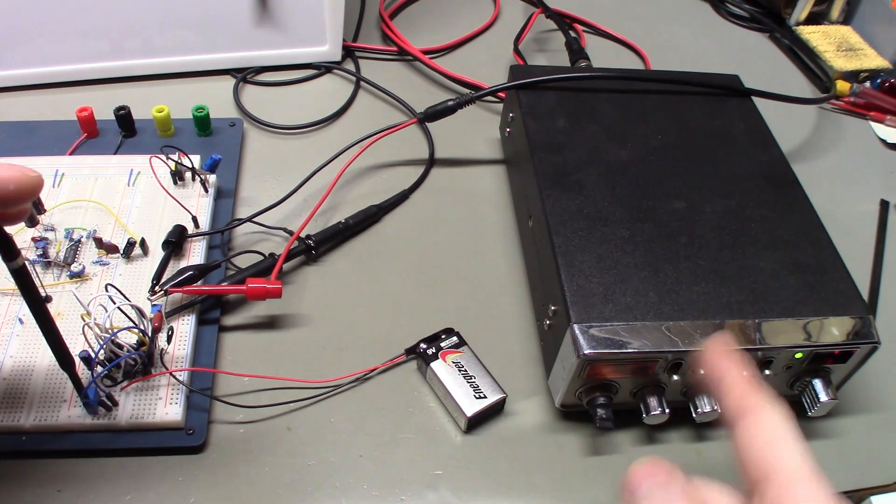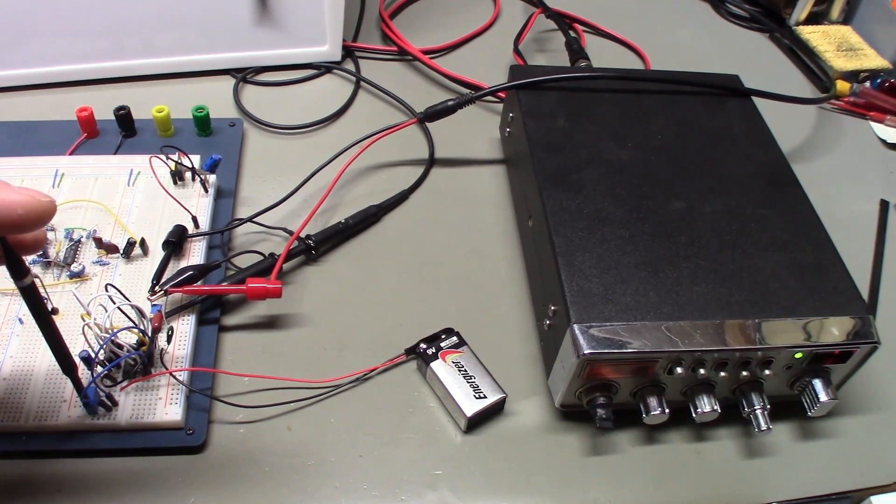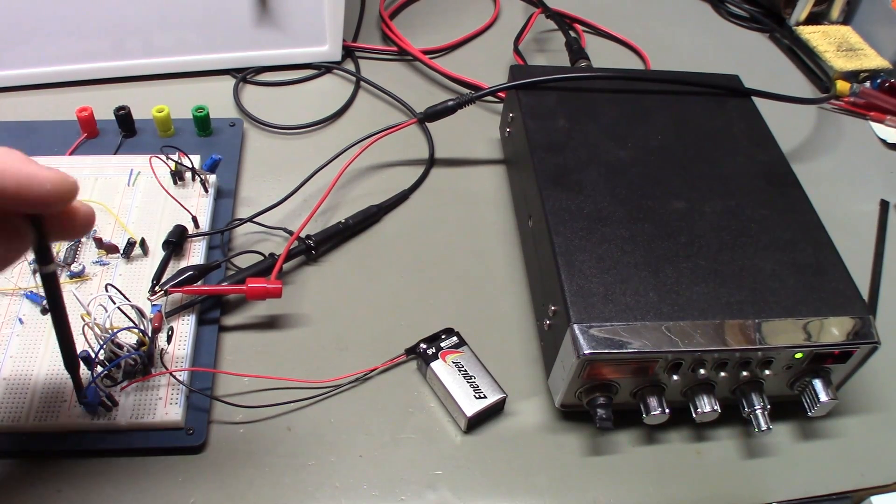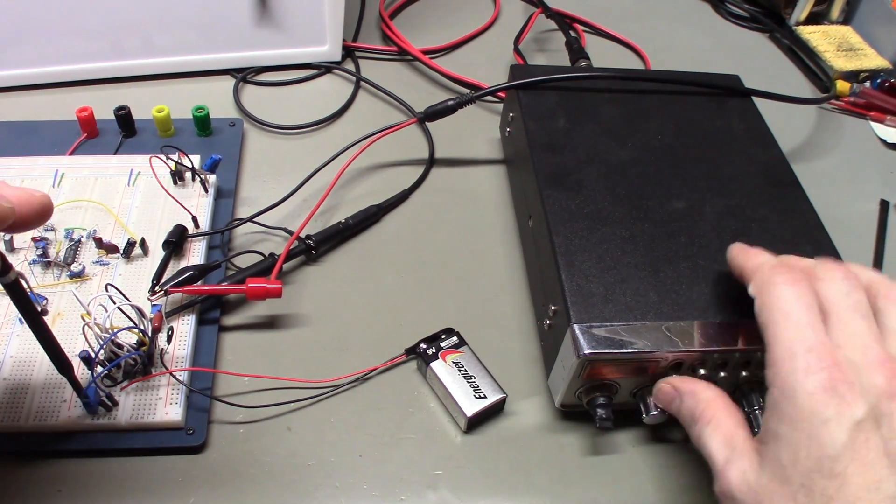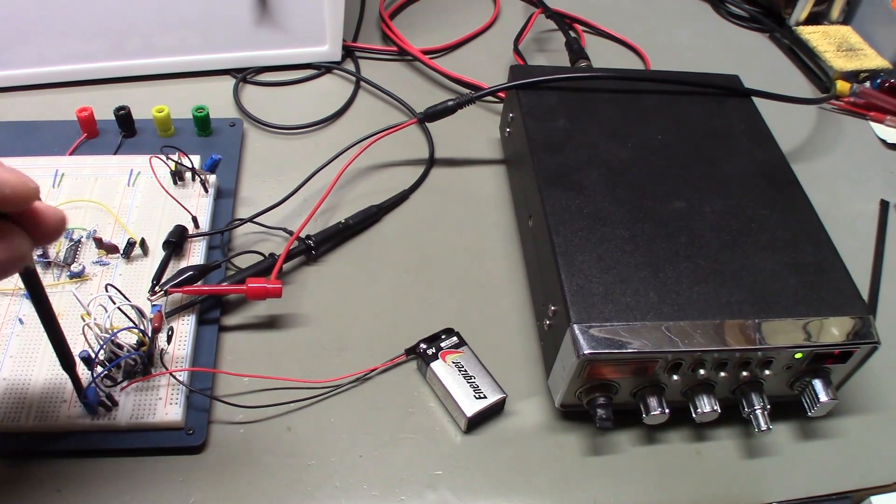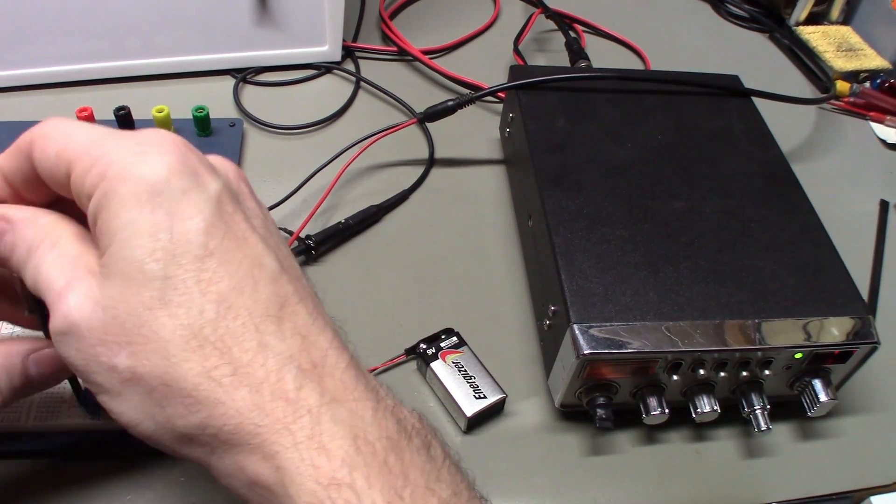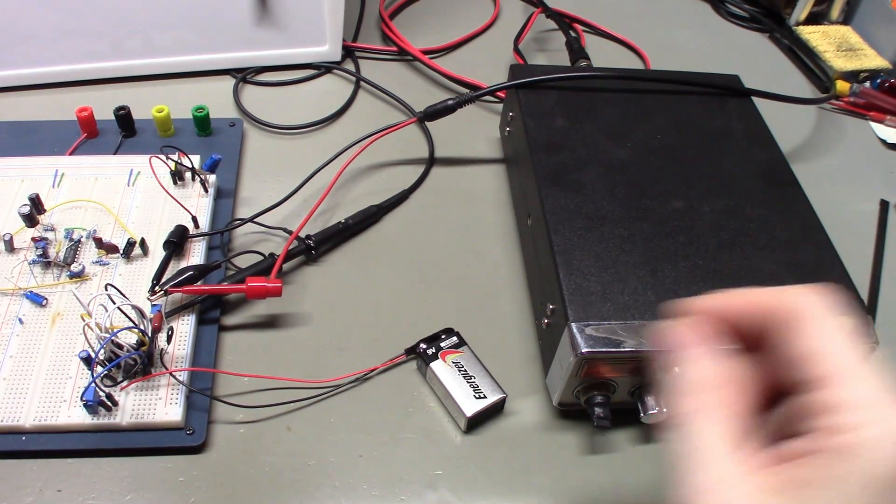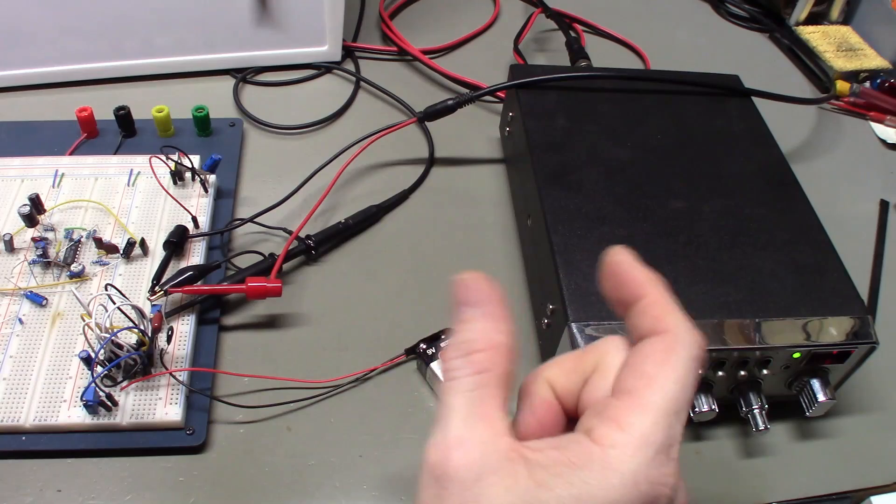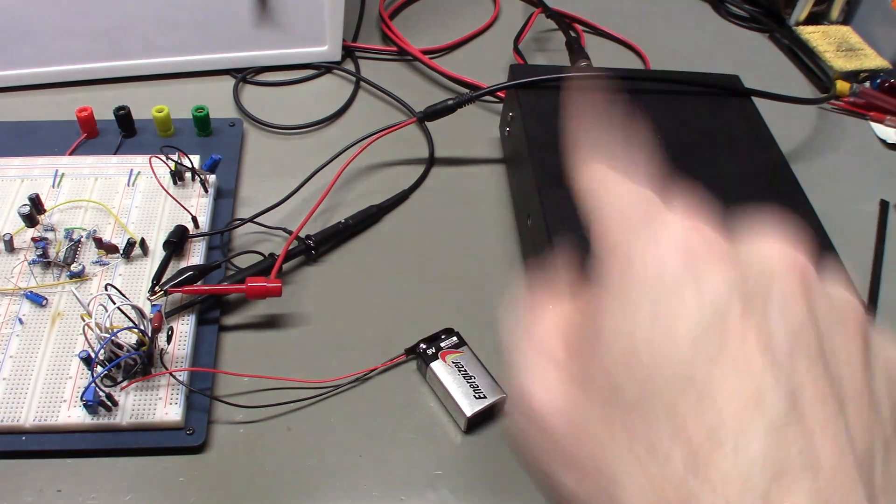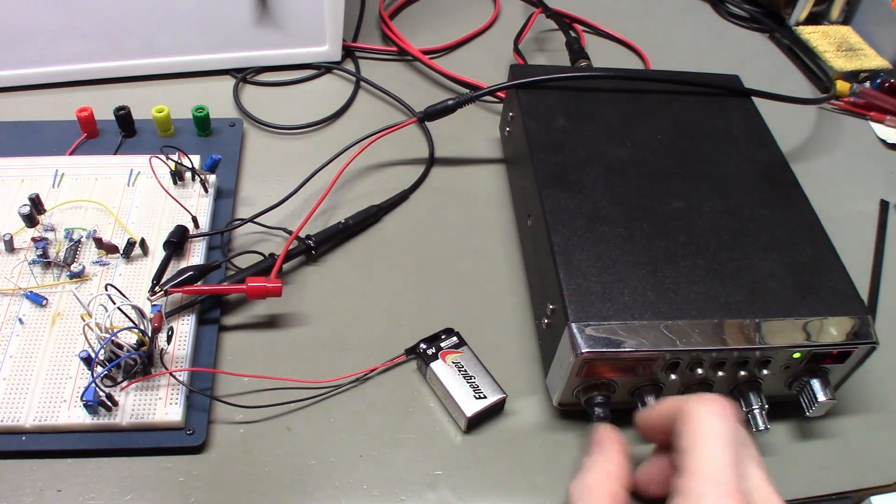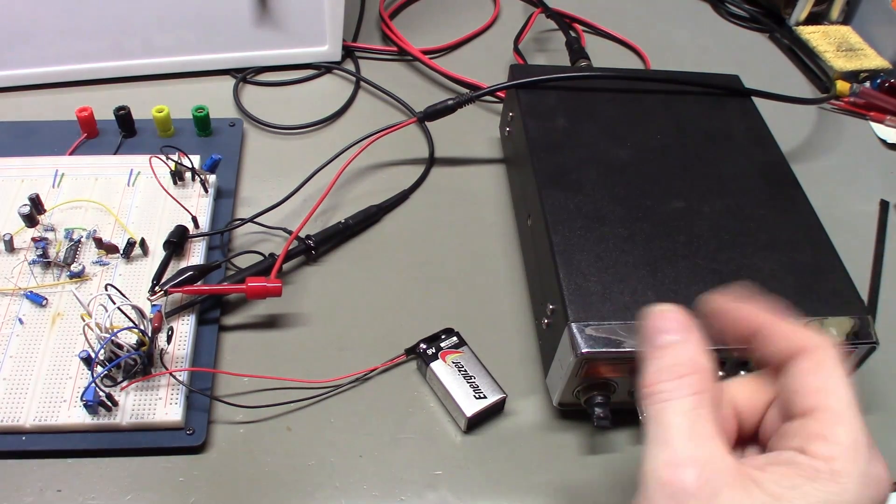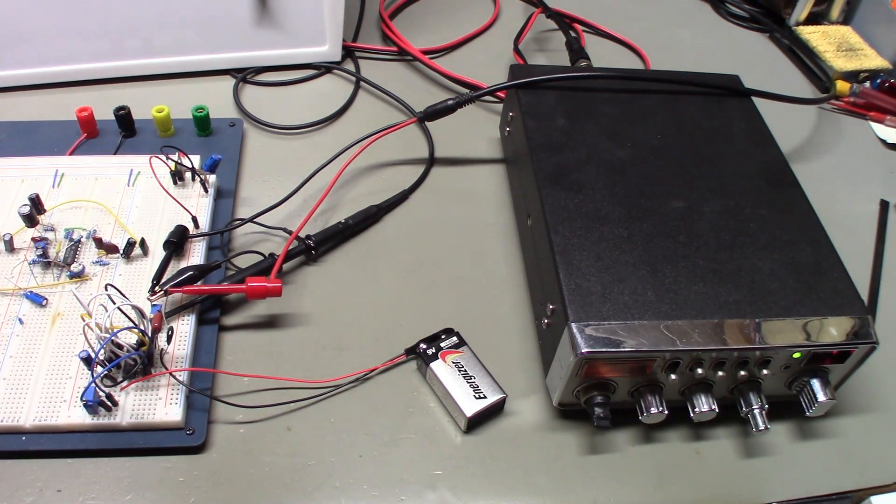We can speed that back up. But the big thing is when we turn the noise blanker on, it's gone. And you'll see that happens no matter what speed we set it at. It's just as effective because it's not so much looking for the spacing between the pulses, it's looking for that really fast rise time pulse. That's what the noise blanker circuit is designed to block out. How frequently those pulses happen really isn't as important.